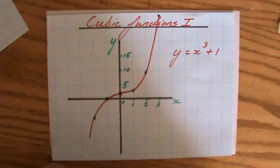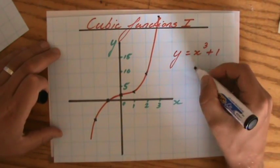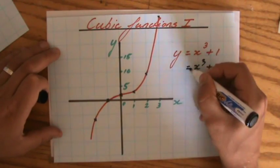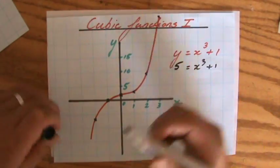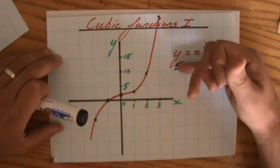Well, x to the power of 3 plus 1 is my graph. And now it doesn't say equals y, but now it says equals 5. So what has been replaced? y has been replaced by 5.